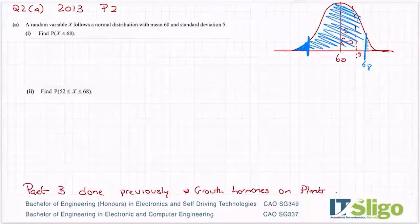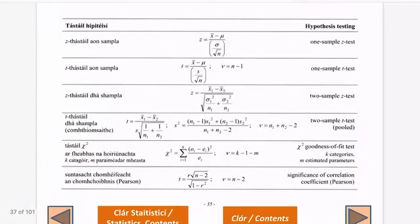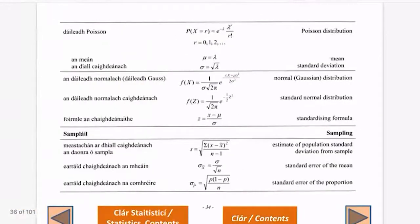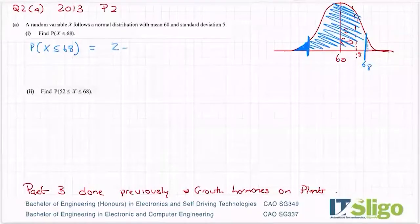So let's have a look. We will do the probability that X is less than or equal to 68. So from the log tables, the standardizing formula is z is equal to x minus mu over sigma.